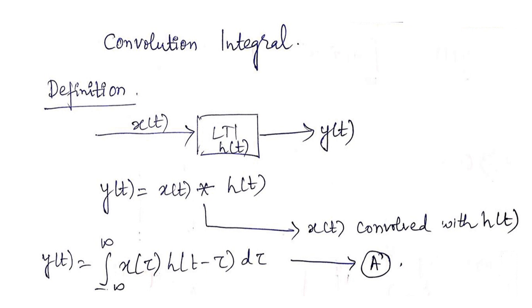Convolution is used in system analysis to determine the output y(t) given the input and the impulse response of the system. We can also discuss this in discrete time domain, but today's lecture is focused on computing y(t) when we have x(t) and h(t) in continuous time. Mathematically, we describe y(t) using the convolution integral expression.